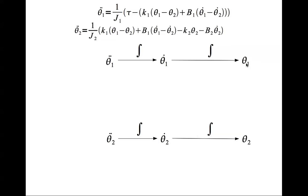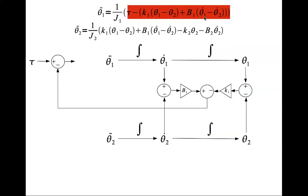Now we write all these terms graphically. So let's look at that term: k1 times theta 1 minus theta 2 plus b1 times theta 1 dot minus theta 2 dot. Here is theta 2 dot, here is theta 1 dot, subtract one from the other and scale it by b1. There is theta 1, there is theta 2, subtract one from the other, scale it by k1, and then add both.